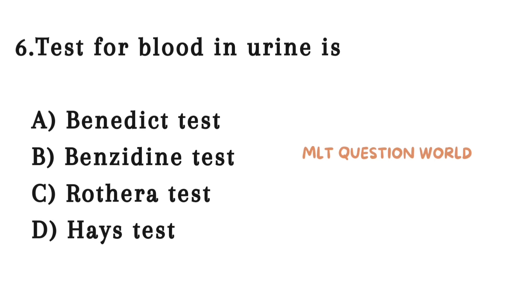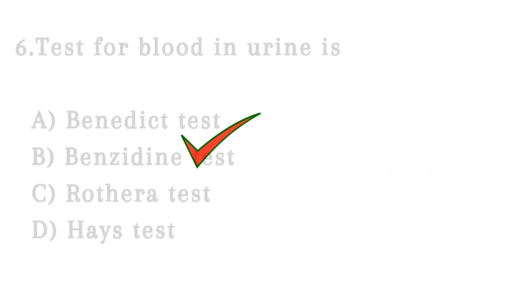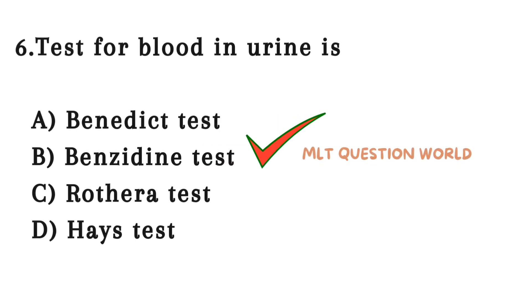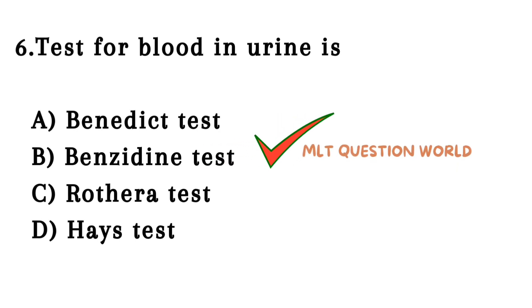Next question. Test for blood in urine: Option A. Benedict's test, Option B. Benzidine test, Option C. Rothera's test, Option D. Haze test. The right answer is Option B — Benzidine test.